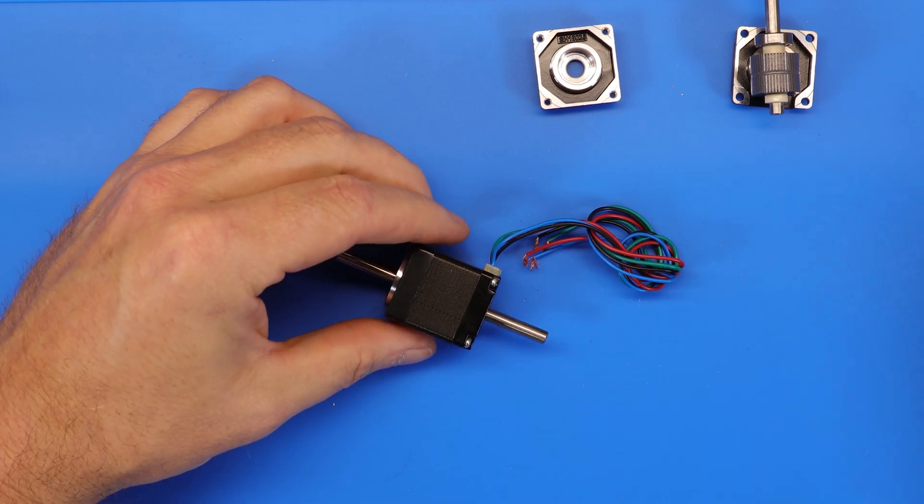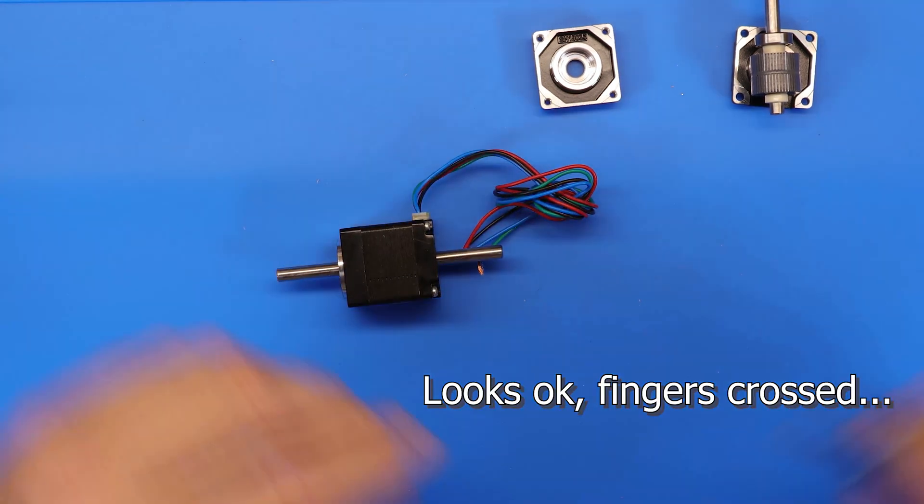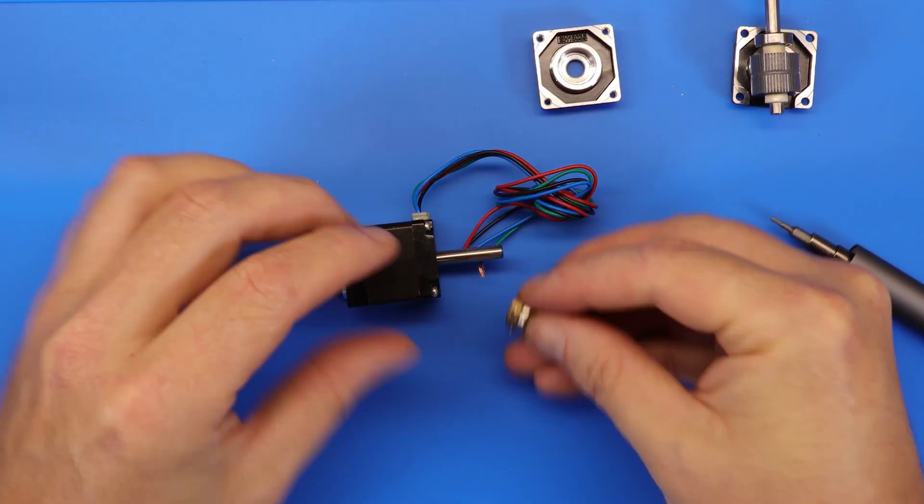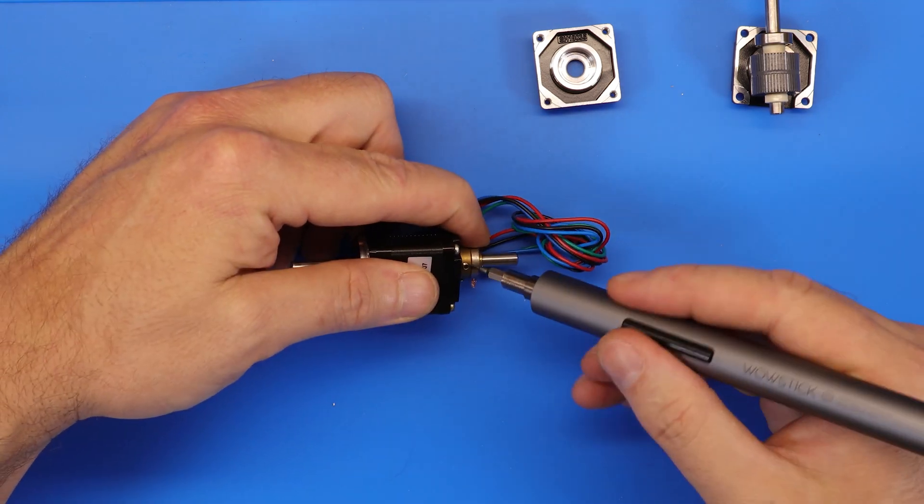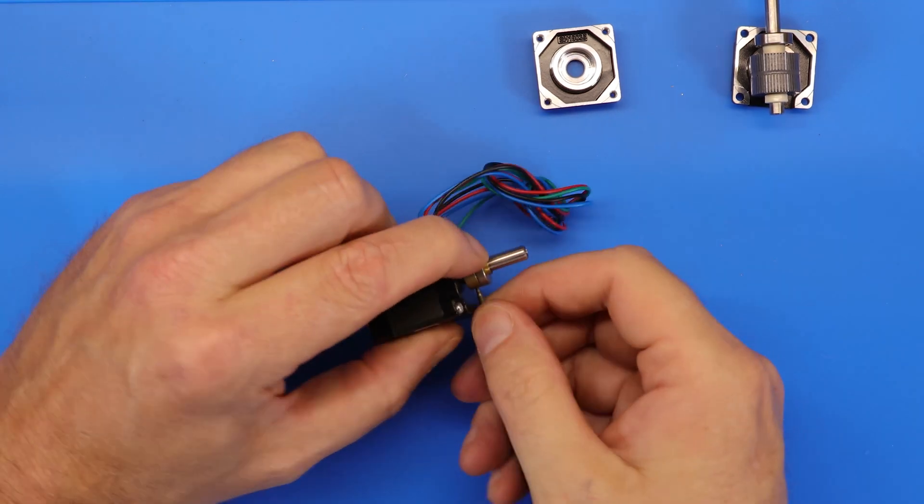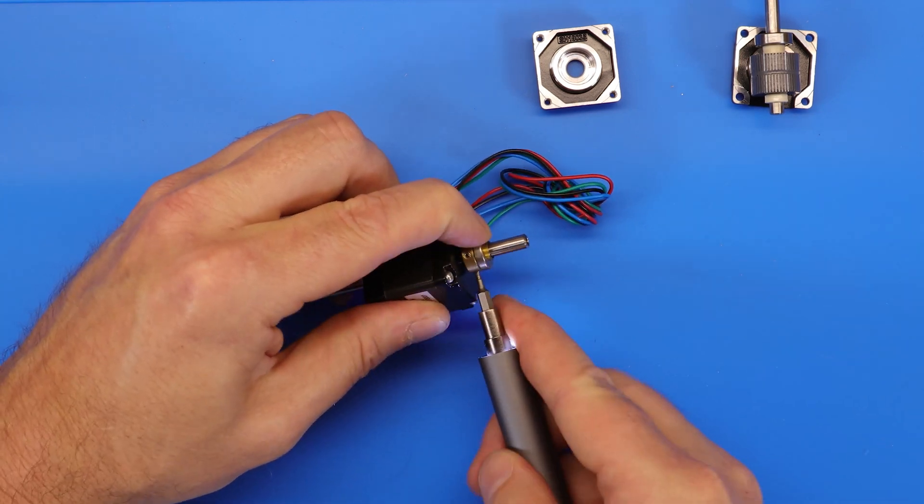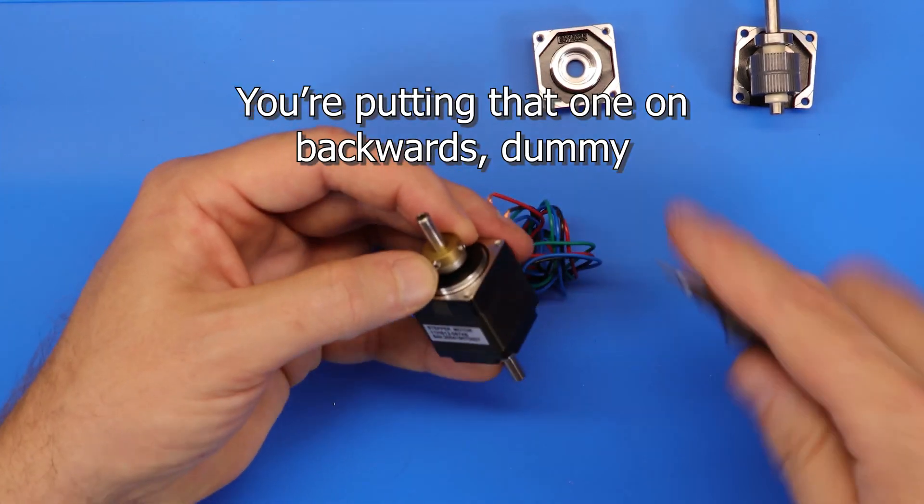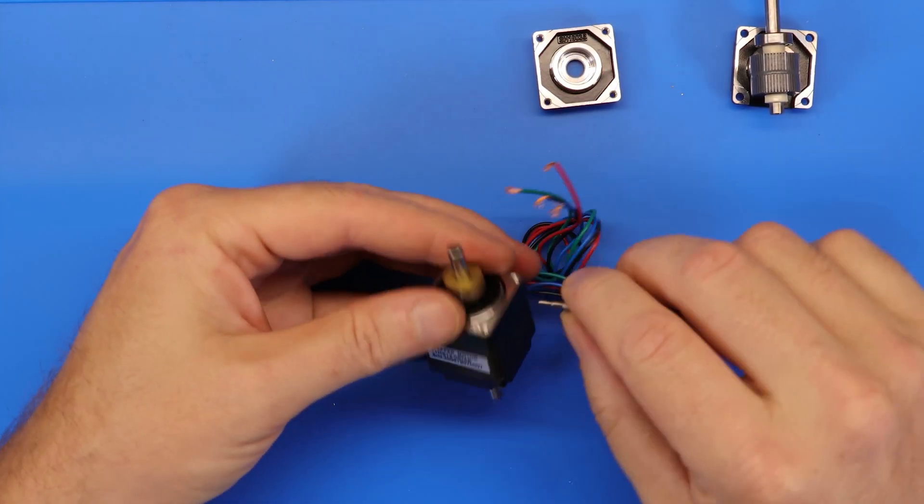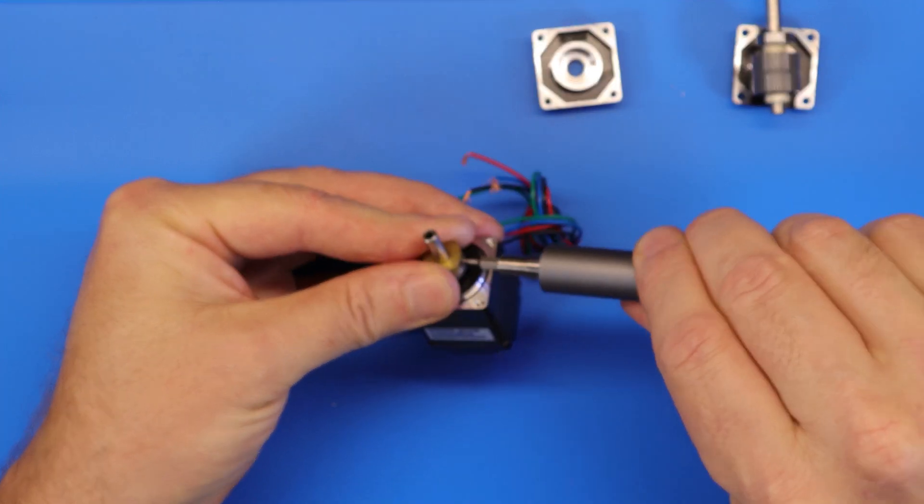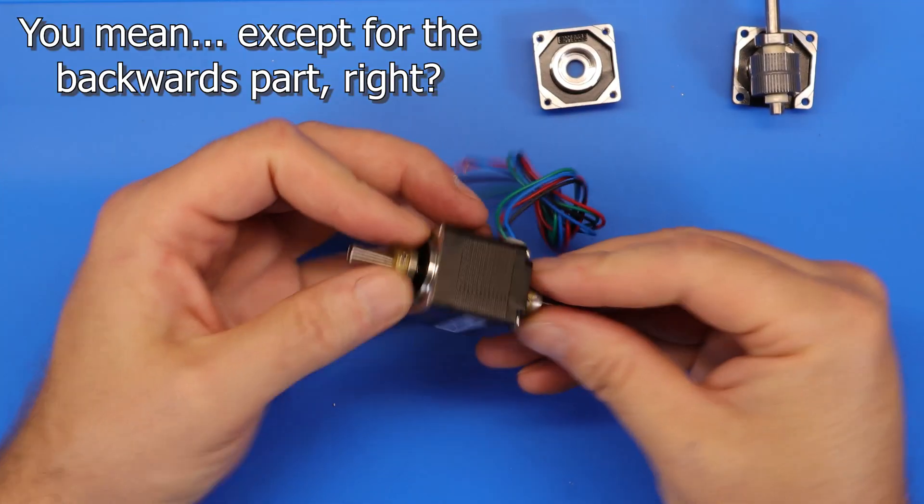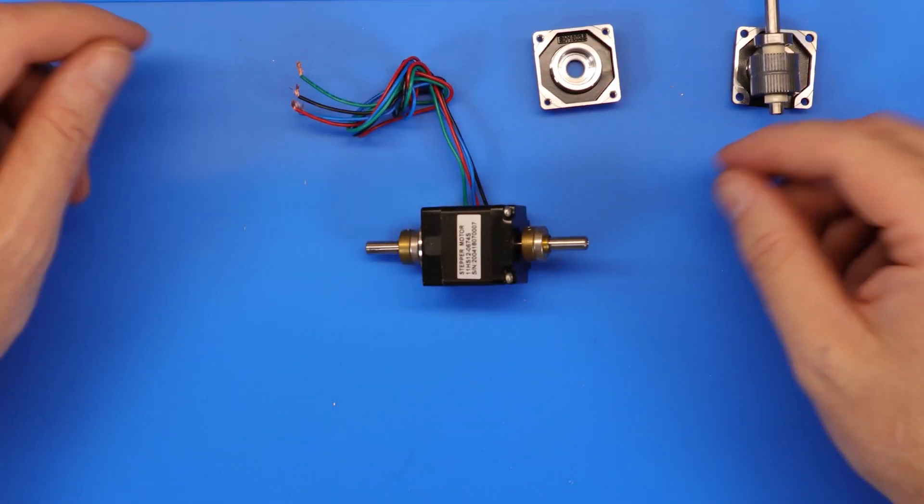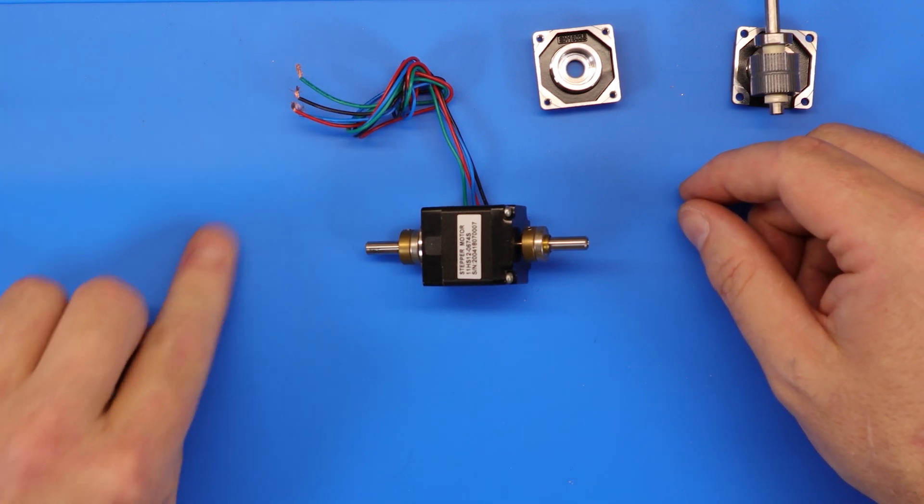So now we're going to go back and put these magnetic collars back on. This should be it. This should be it. So I am going to take this and go slap it into the machine, wire it up, and we'll give it a test.